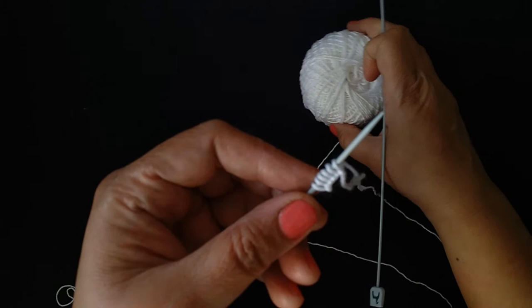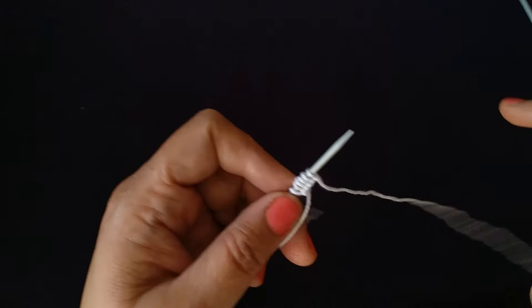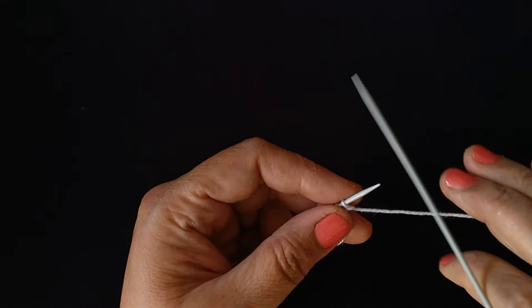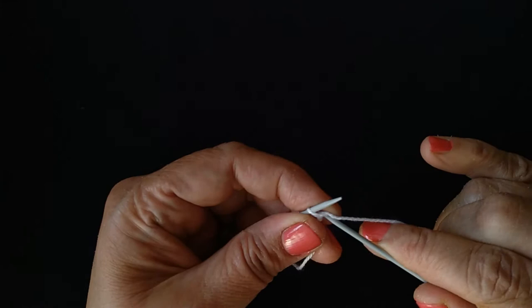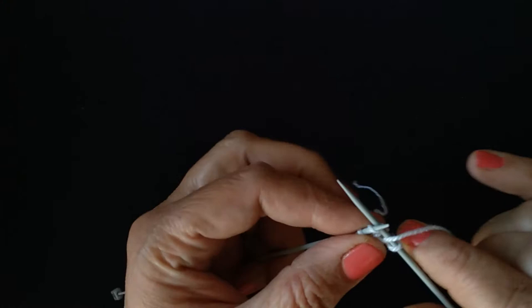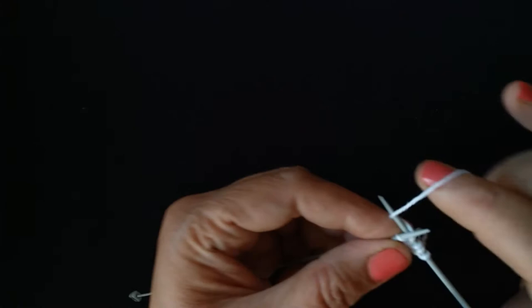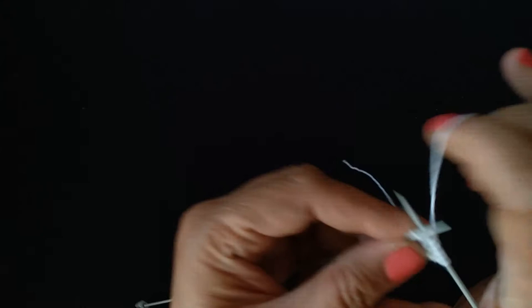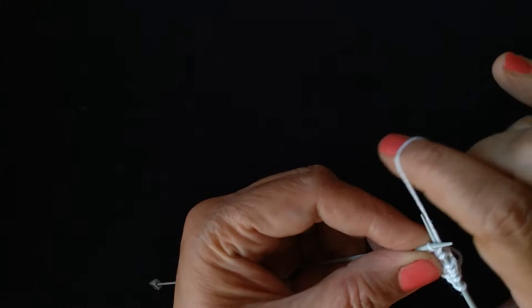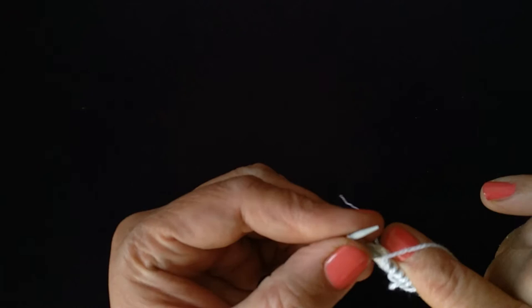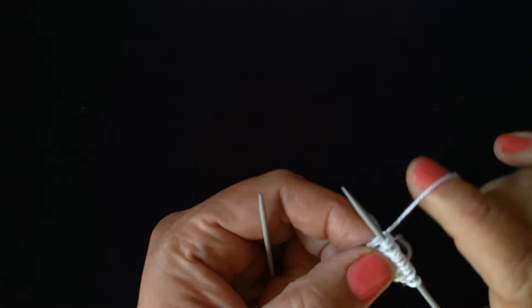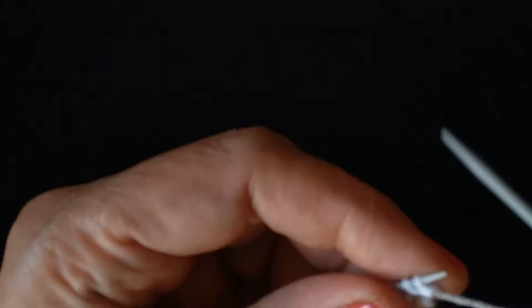Every row or even row or wrong side we will purl all stitches. First row: knit 1, yarn forward, knit 1, yarn forward, knit 2, yarn forward, knit 1, yarn forward, knit 1. First row we have completed. Second row: purl all.